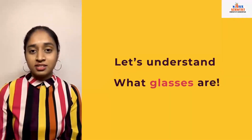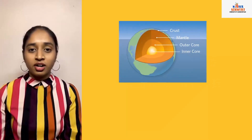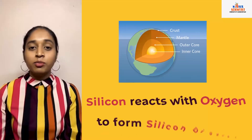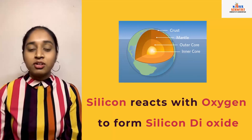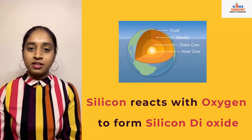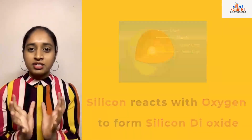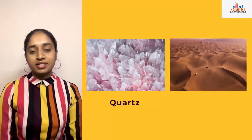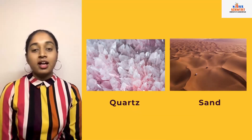To understand this, we have to first understand what glass is and where it comes from. It all starts in the earth's crust where the most important elements are silicon and oxygen. These react to form silicon dioxide, whose molecules also react to form a regular crystalline structure called quartz. This quartz is commonly found in sand, where it makes up most of the grains of sand, and it is also the important ingredient in glass.